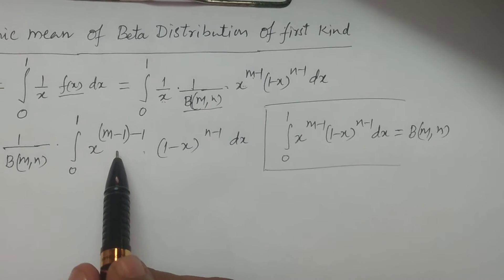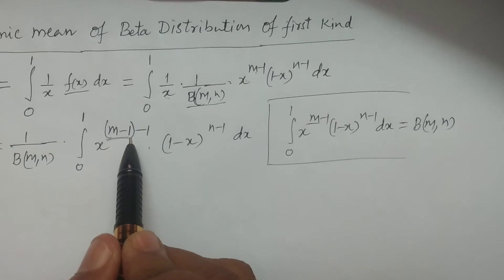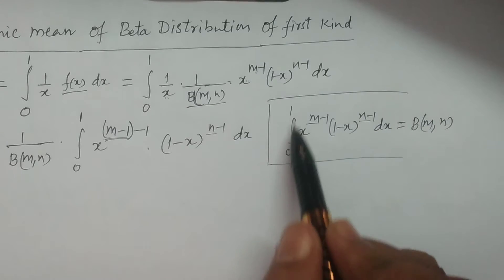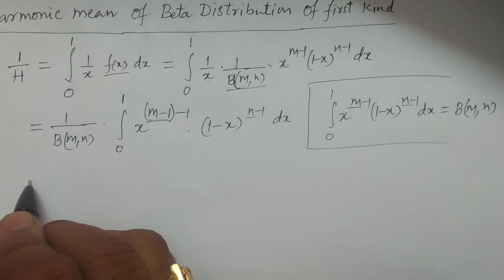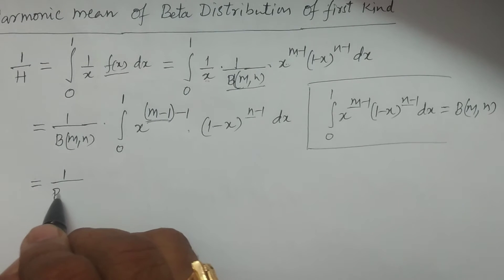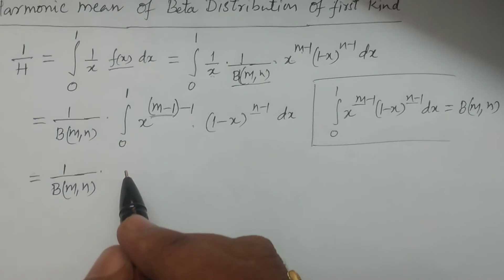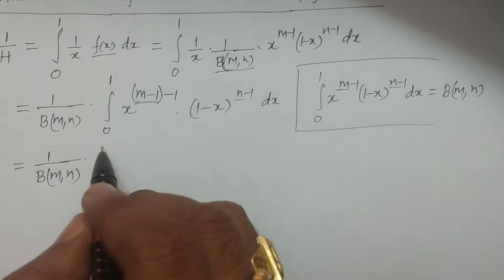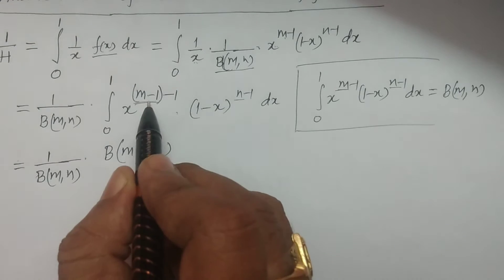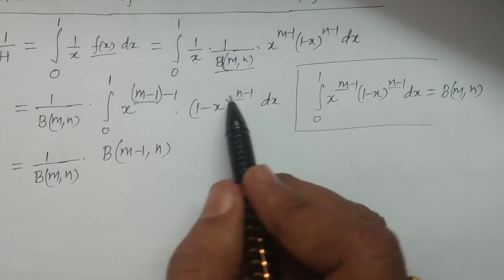You can see this integral is in a similar form, but in place of m, here we have m minus 1. The n is the same, and the limits are 0 to 1. Therefore, we apply the beta distribution of first kind integral formula: the result is 1 by beta(m, n) times beta(m minus 1, n), where the parameters are m minus 1 and n.